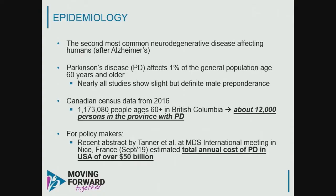As mentioned, this is a common condition. It's the second most common neurodegenerative disease after Alzheimer's, affecting about 1% of those aged 60 to 65 and above. Almost all studies show a male preponderance — roughly a 3-to-2 ratio of men to women. Based on Canadian census data from 2016, there were almost 1.2 million people aged 60 and above living in British Columbia, meaning approximately 12,000 persons with Parkinson's in BC — a significant number.